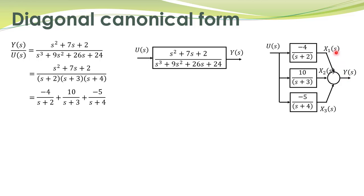To obtain the diagonal canonical form representation, we give these signals new names: this signal is named x1, this signal is named x2, and this signal is named x3. We have defined these state variables. State variables are not unique — we can define them in several different ways. We have already studied two different techniques: controllable canonical form and observable canonical form. This is another approach.